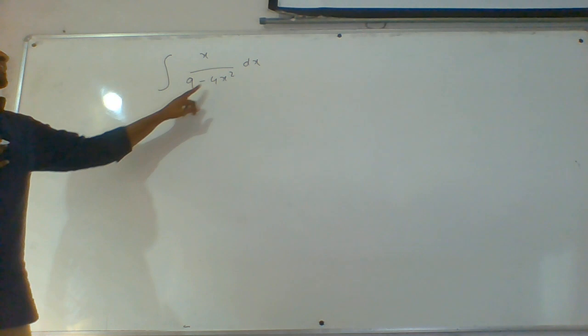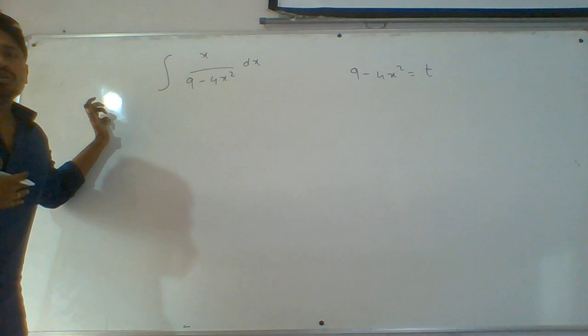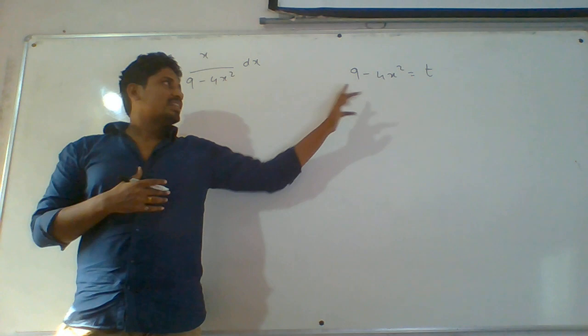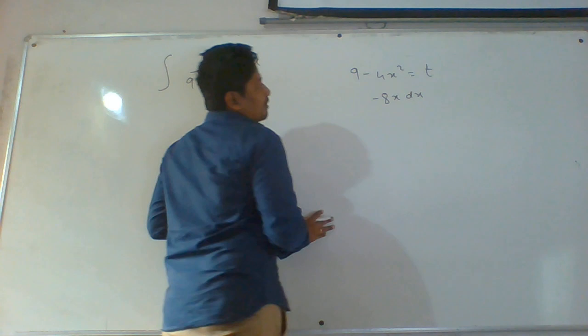Let 9 minus 4x square equal t. Apply derivative on both sides with respect to variables. The derivative of 9 is 0, for minus 4x square it is minus 8x dx, and for t it is dt.